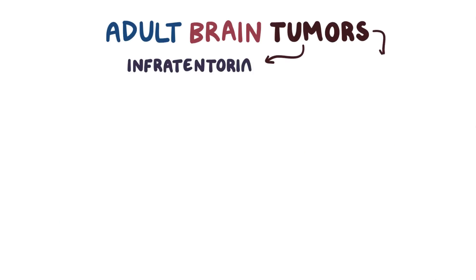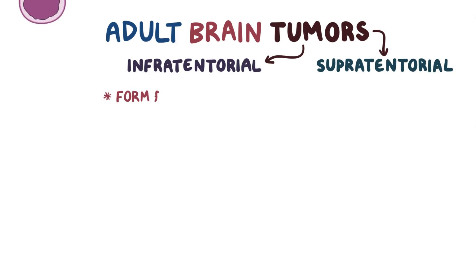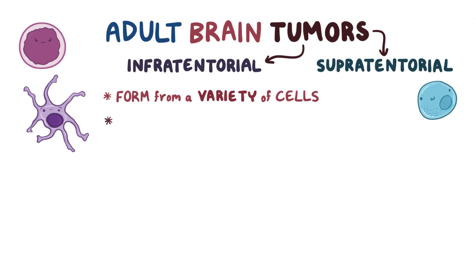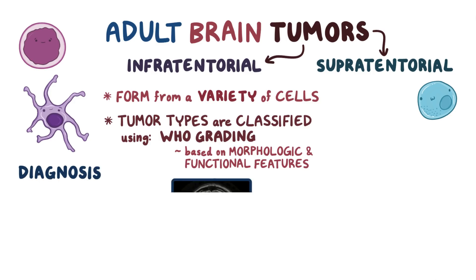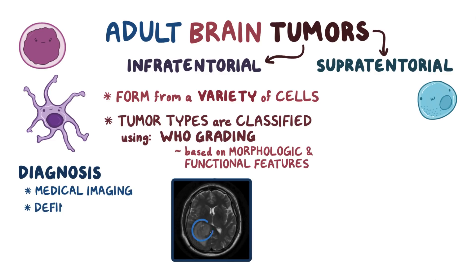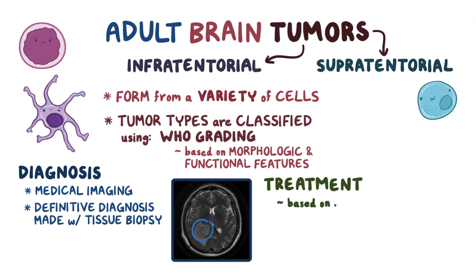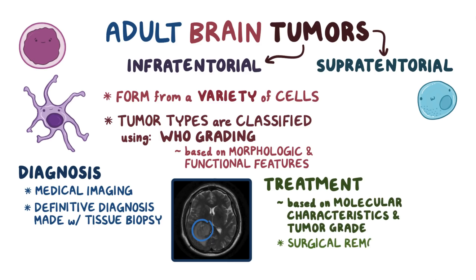Quick recap: Adult brain tumors can be infratentorial or supratentorial and form from a variety of cells. Tumor types are classified using WHO grading based on morphologic and functional features. Tumor symptoms depend on tumor cell type, size, and location. Diagnosis includes medical imaging, with a definitive diagnosis being made with a tissue biopsy. Treatments are largely dependent on the molecular characteristics and tumor grade, and can incorporate surgical removal or a combination of radiotherapy and chemotherapy.